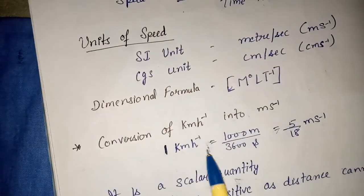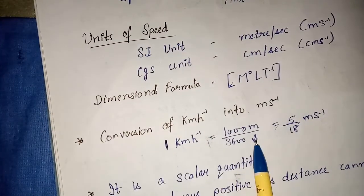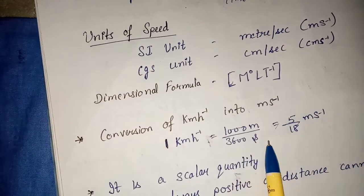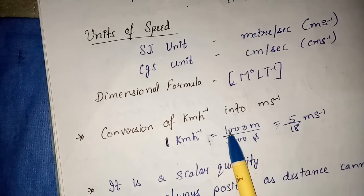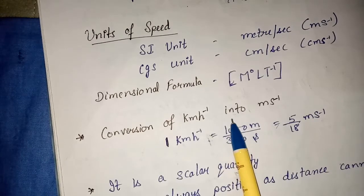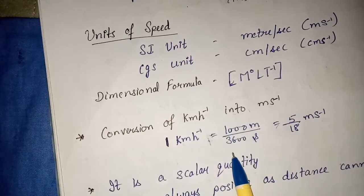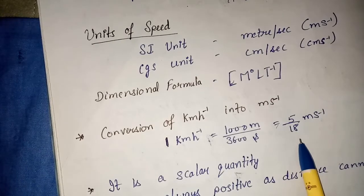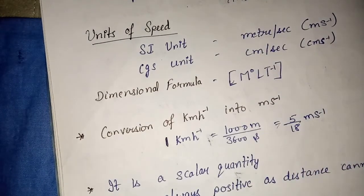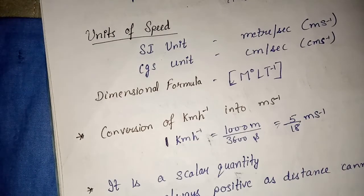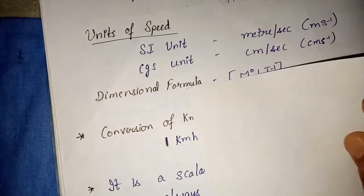You will multiply by 5 by 18 to get meter per second. So if you have a speed given in kilometer per hour but you have to convert it in meter per second, you multiply that value by 5 by 18.